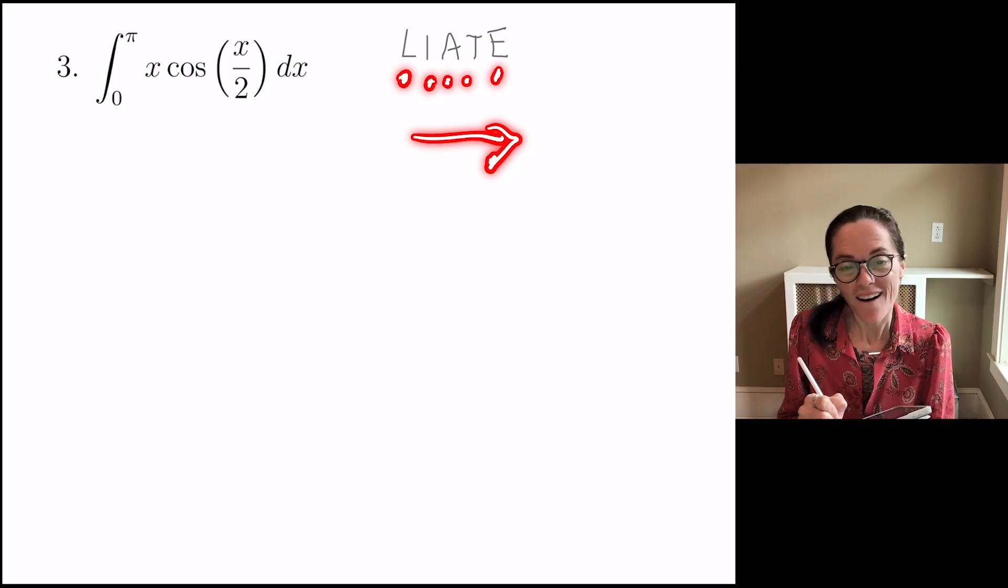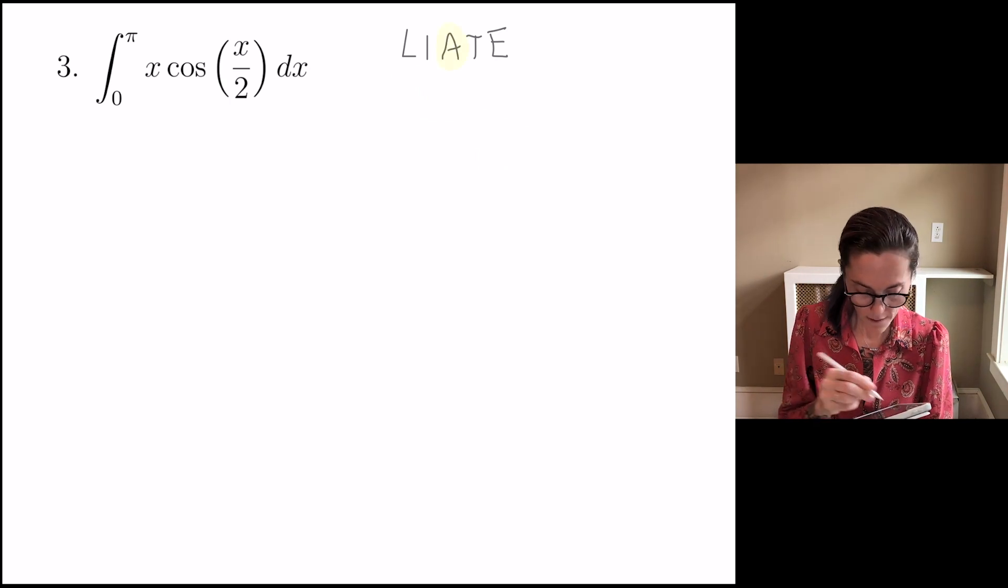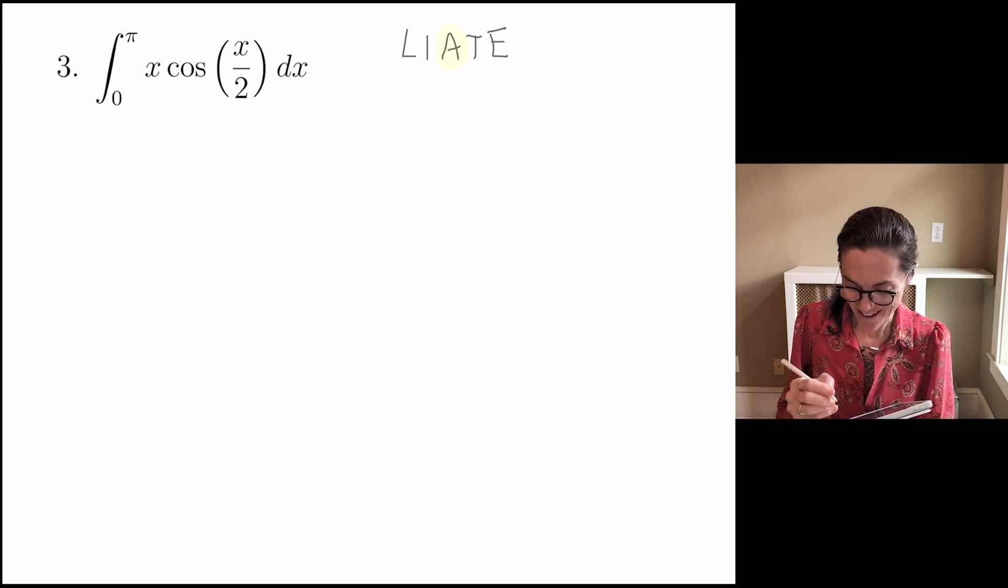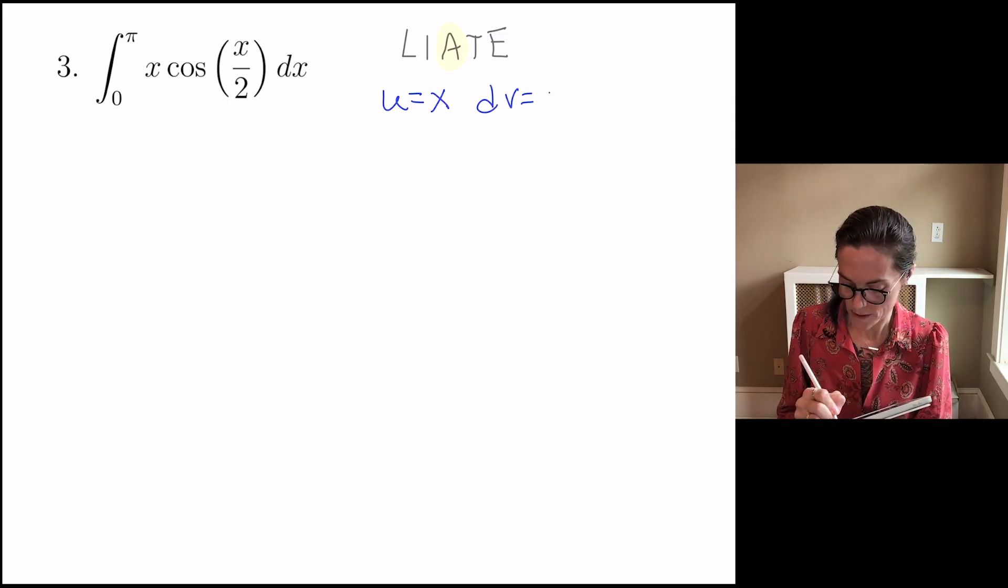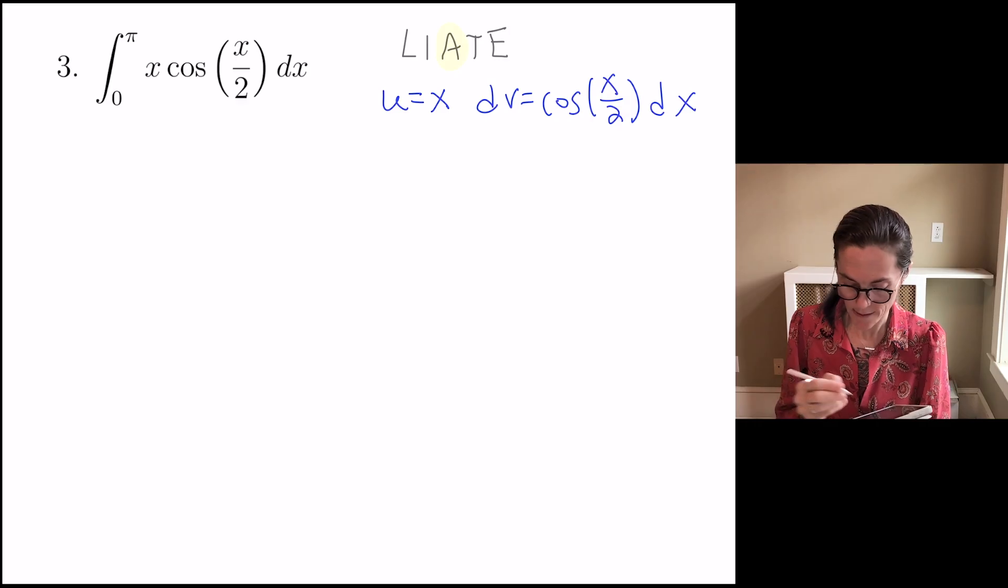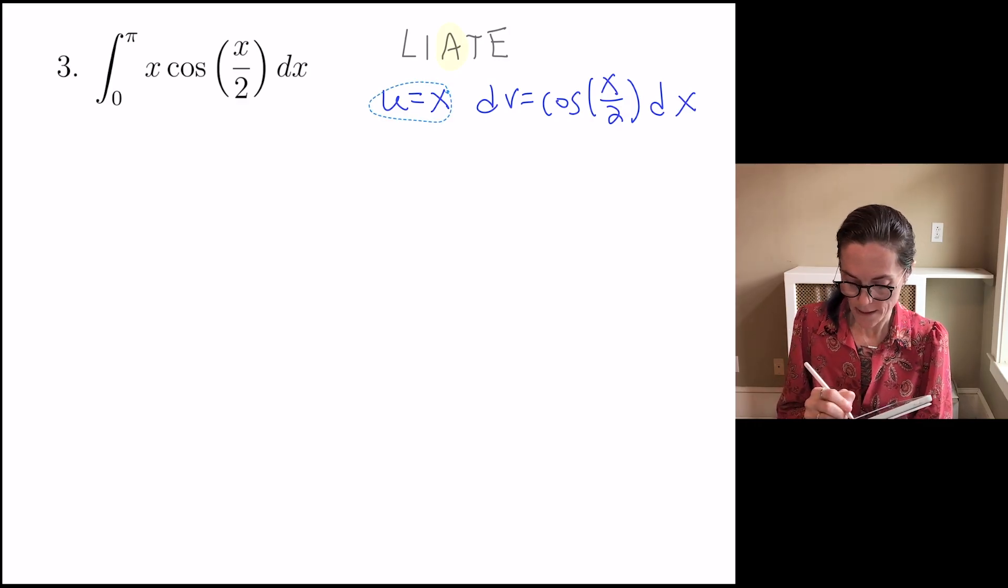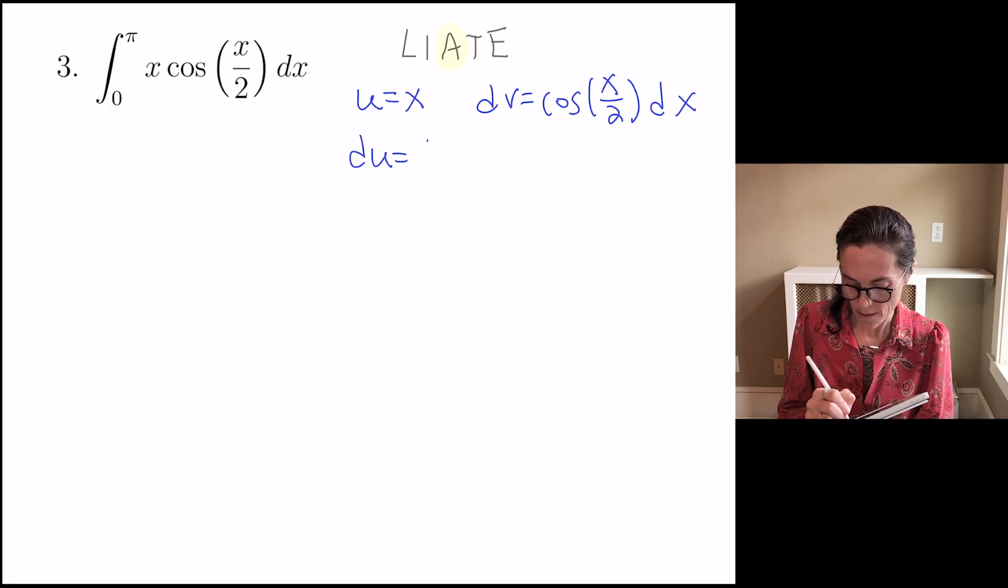So I have no log, I have no inverse trig, but I do have algebraic here. So let's let u be the x, and then dv is everything else, including the dx. So we have cosine x over 2 dx. So we differentiate u, du is dx. Here we integrate.